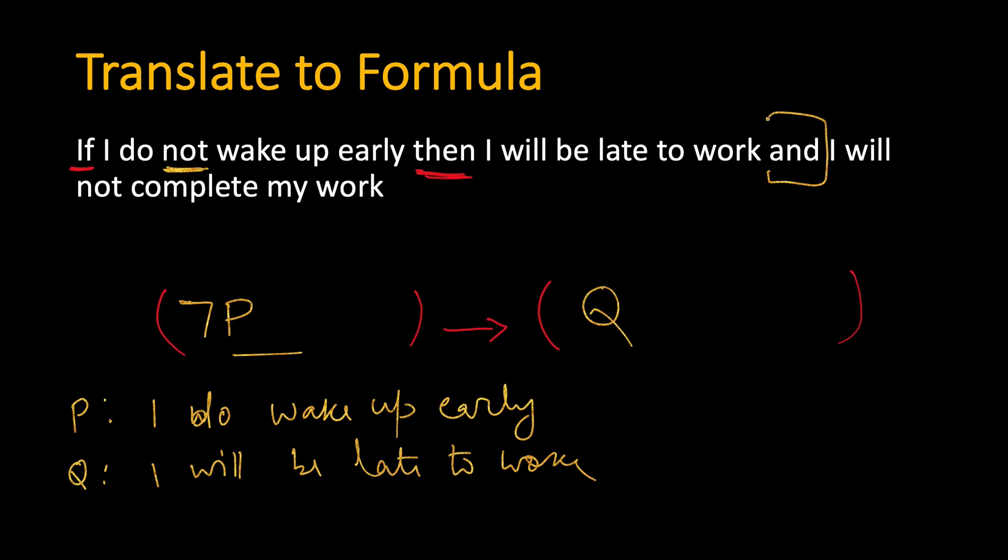And is another connector. I will not complete my work. Again not is a connector. So R is I will complete my work and not of that will be this.